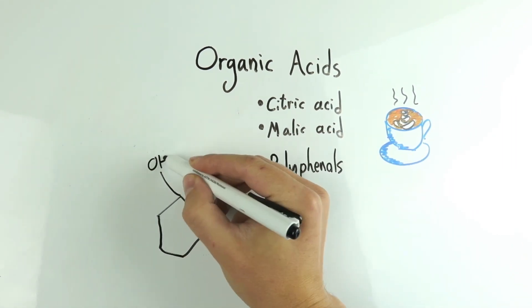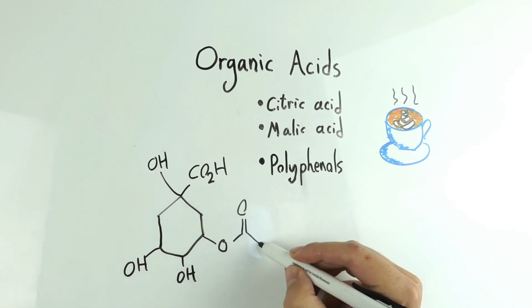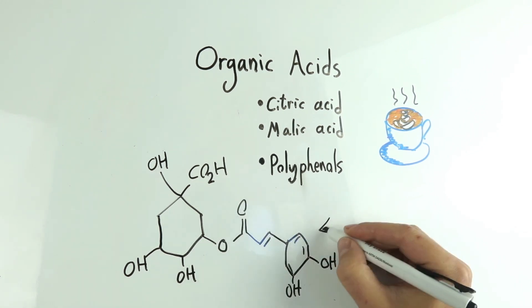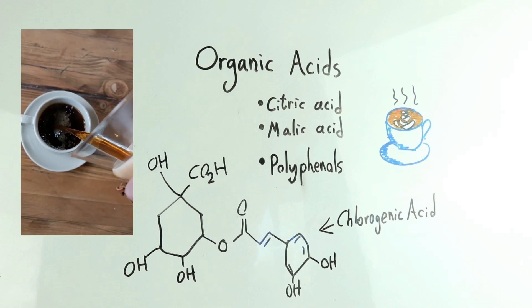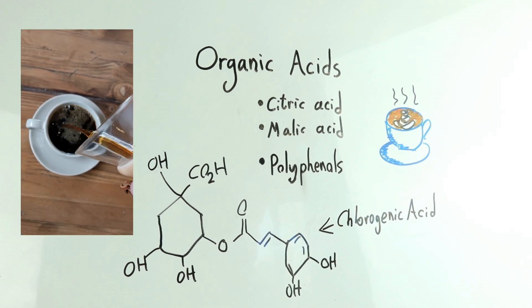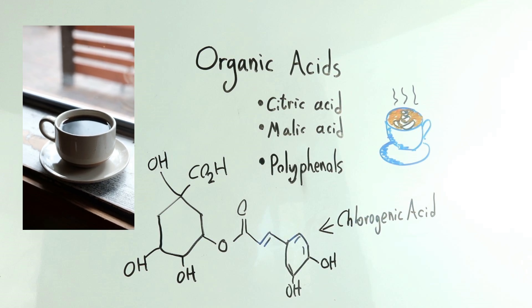Polyphenols, such as caffeylquinic acids, and specifically chlorogenic acid, are another important source of flavor and acidity in coffee, and they're often touted for numerous health benefits, including being antioxidants. The balance of acids in coffee is a very complex topic that I will cover in more detail in a future video.